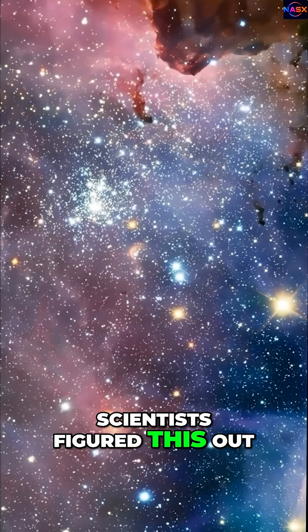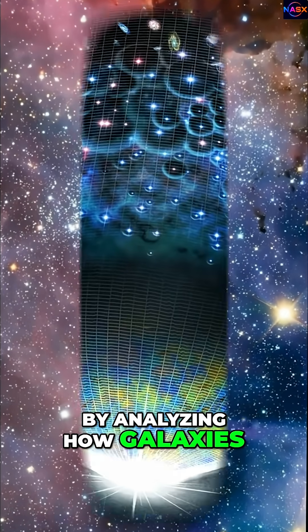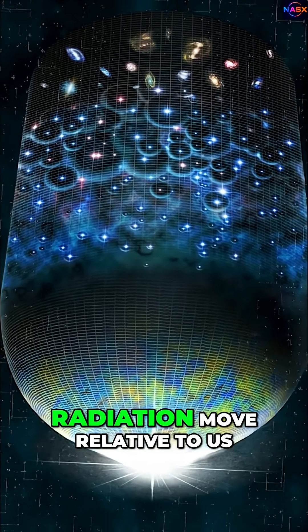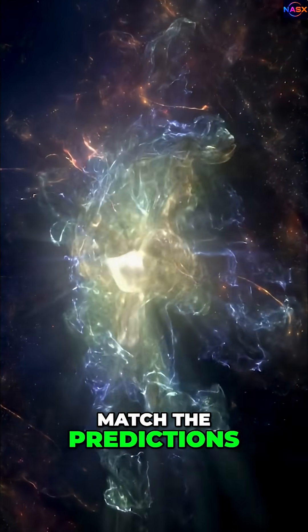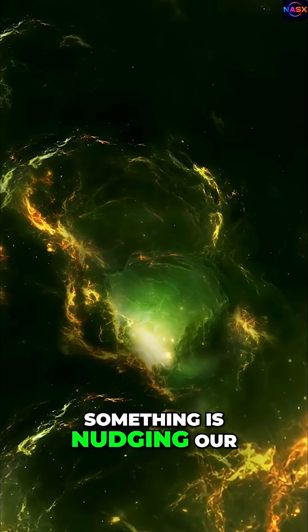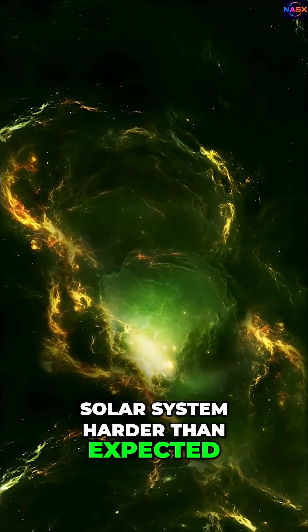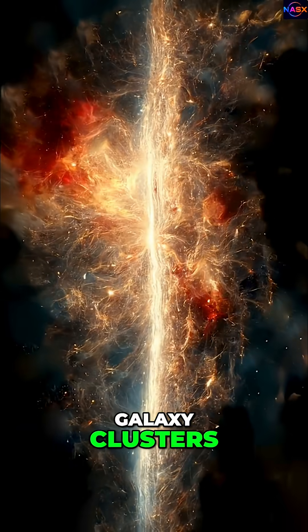Scientists figured this out by analyzing how galaxies and cosmic microwave background radiation move relative to us. And the numbers don't match the predictions. Something is nudging our solar system harder than expected. Maybe massive structures like galaxy clusters, or something we haven't discovered yet.